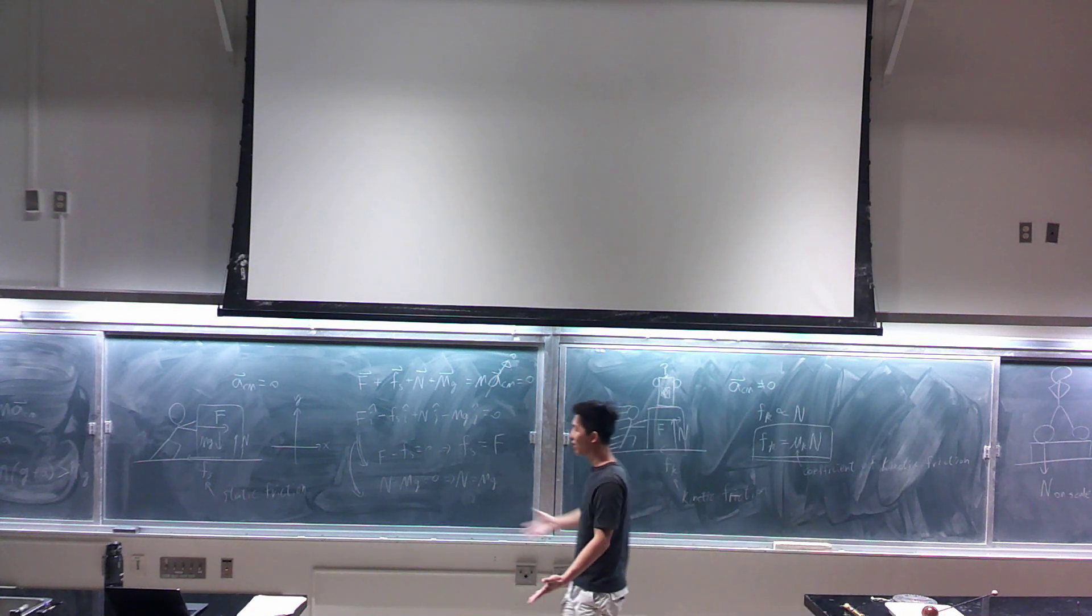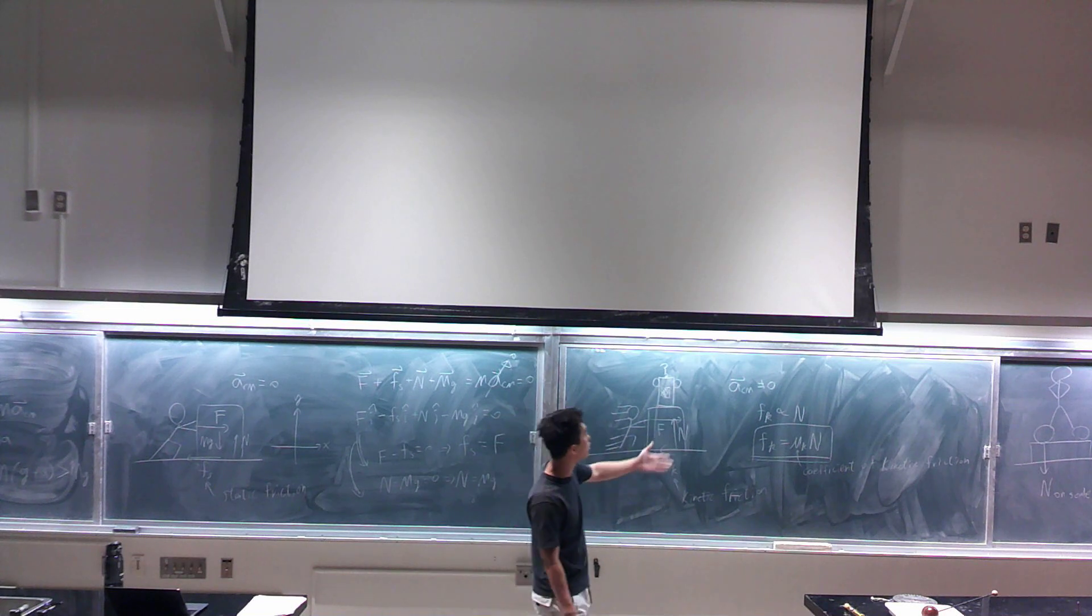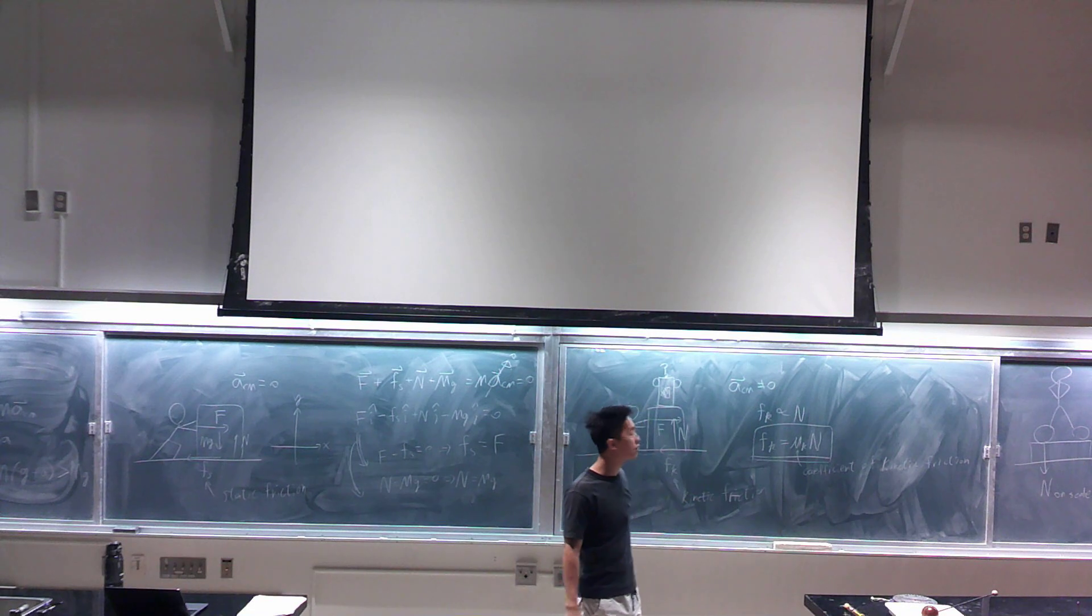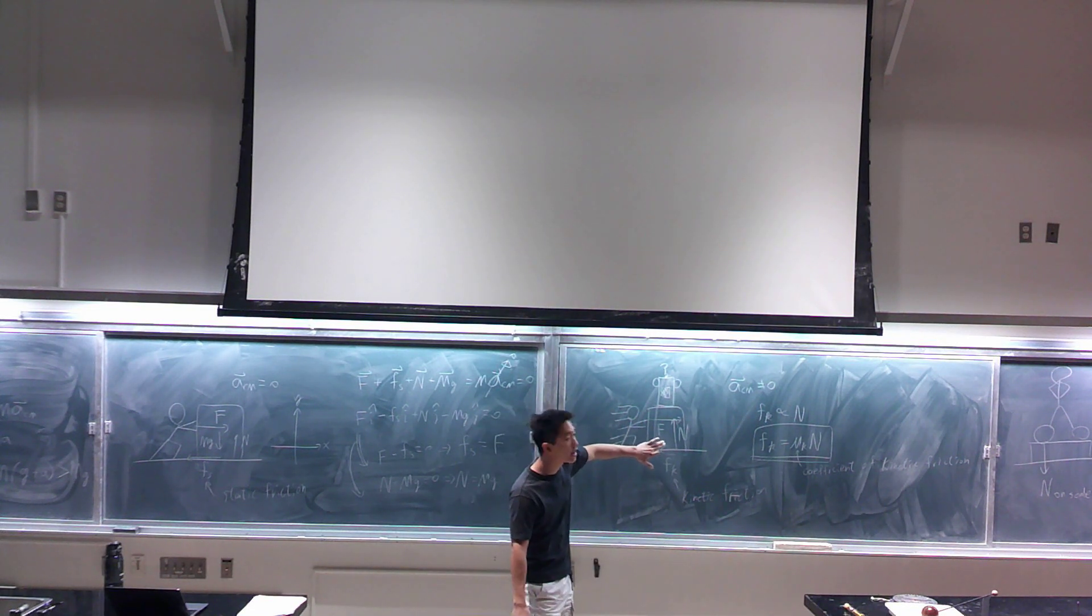So, you need to memorize this. If I give you the normal force and the coefficient of kinetic friction, you need to know how to compute the kinetic friction. And the direction is the relative velocity of the sliding.